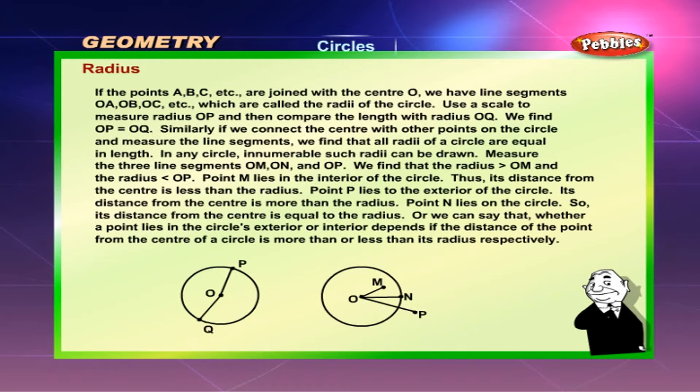Use a scale to measure radius OP and then compare the length with the radius OQ. Similarly, if we connect the center with other points on the circle and measure the line segments, we find that all radii of a circle are equal in length. In any circle, innumerable such radii can be drawn.